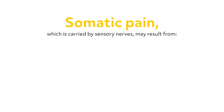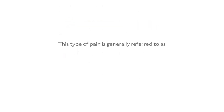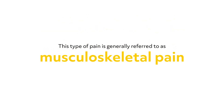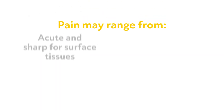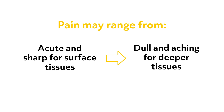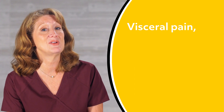Somatic pain, which is carried by sensory nerves, may result from thermal, chemical, or mechanical stimulation of the nerves. This type of pain is generally referred to as musculoskeletal pain and tends to be localized to the area of injury. Pain may range from acute and sharp for surface tissues to dull and aching for deeper tissues. With somatic pain, when an injury heals, the pain lessens and somatic pain usually responds to routine analgesia.